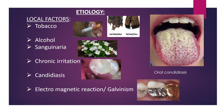Galvanism is a generation of current due to the difference in electrical potential of two dissimilar metals. Galvanic current may arise in the mouth between dissimilar, opposing, or adjacent metallic restorations. The patient may complain of a metallic taste to persistent pain due to chronic inflammation of adjacent oral mucosa.